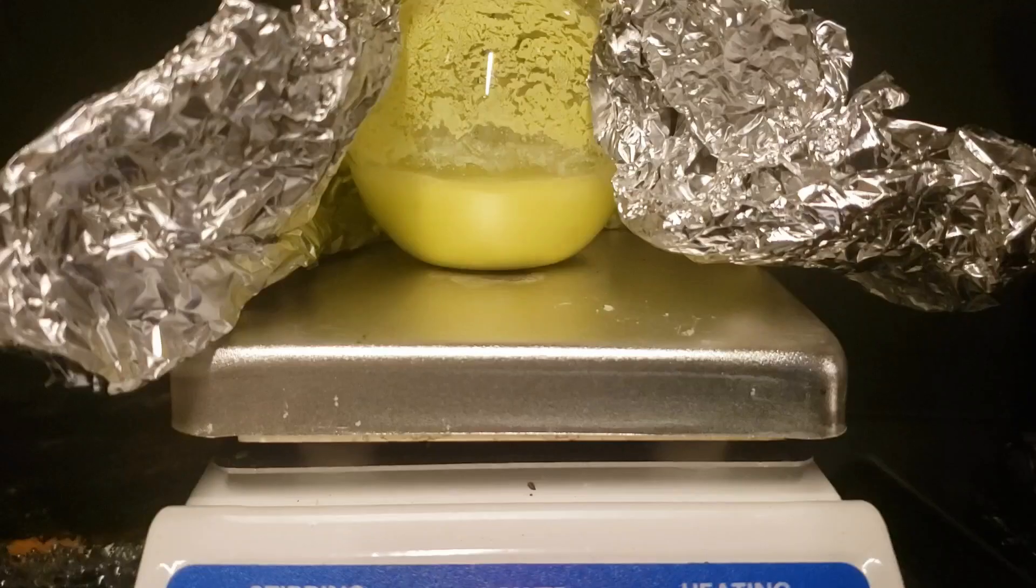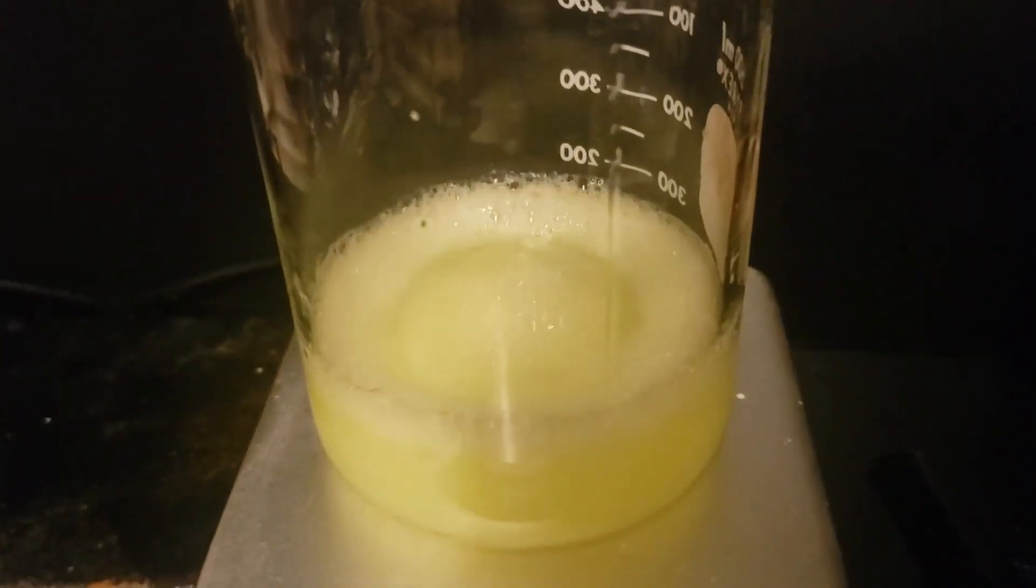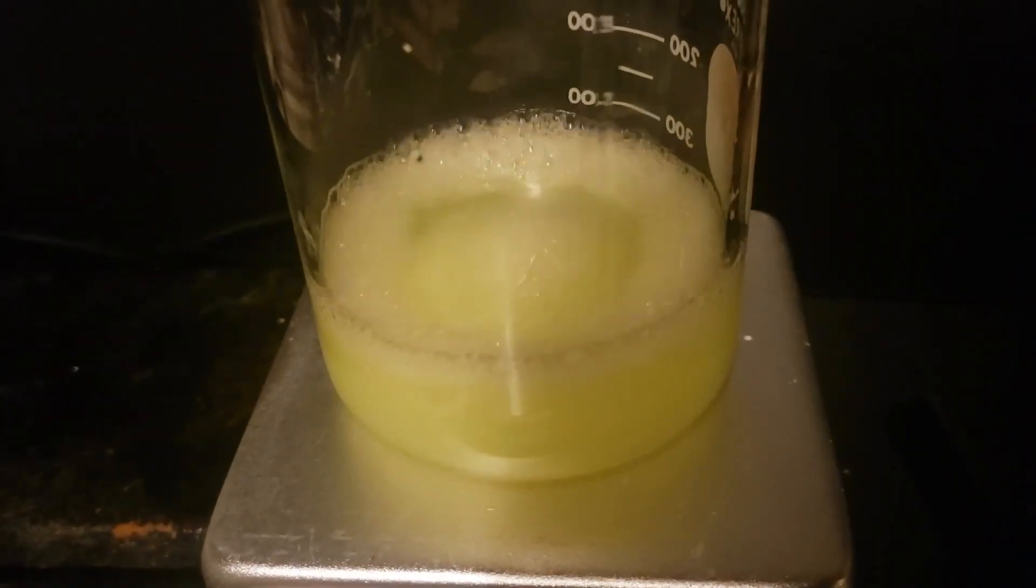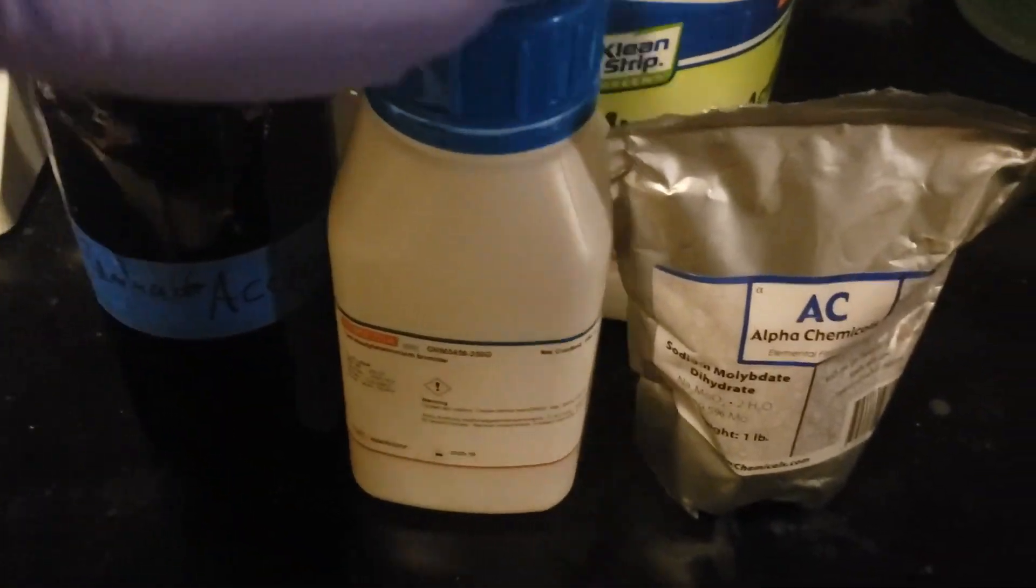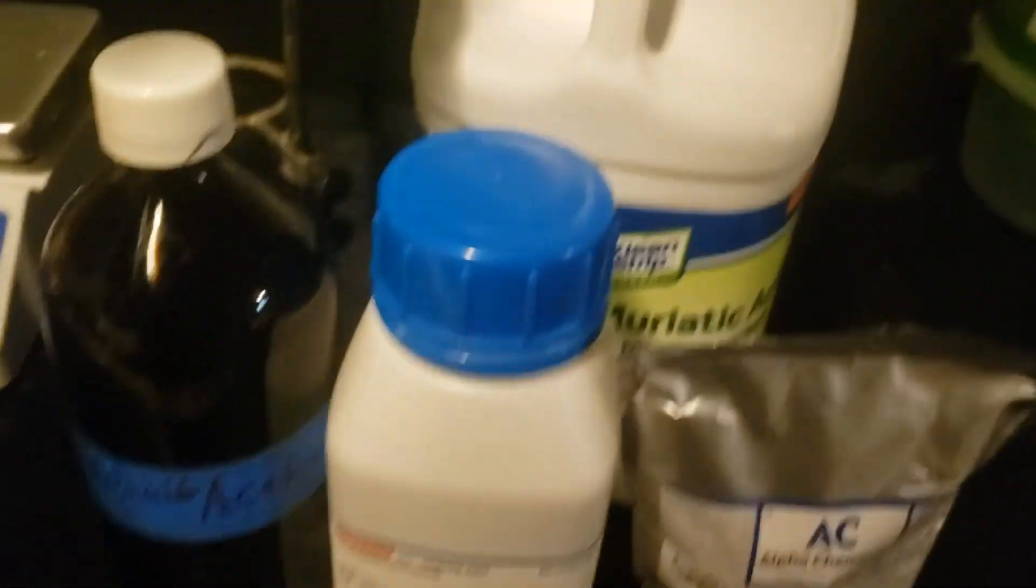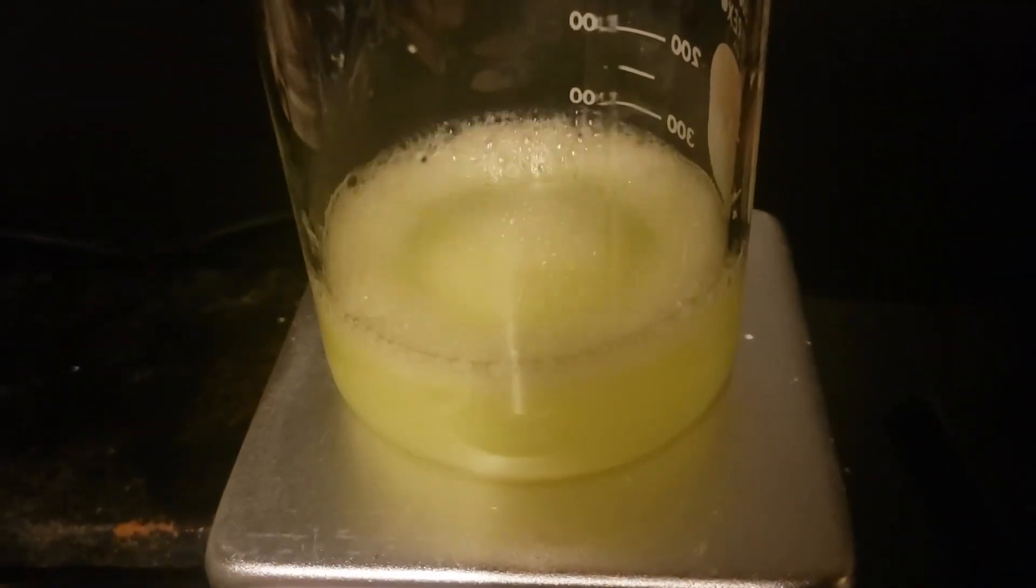Hi everybody and welcome back. Today we're going to be making tetrabutyl ammonium hexamolybdate, an interesting yellow polyoxometalate salt. For this experiment, you will need acetone, tetrabutyl ammonium bromide, sodium molybdate dihydrate, and 20% hydrochloric acid. So without further ado, let's get into it.